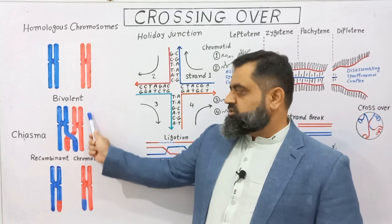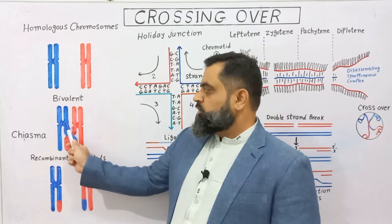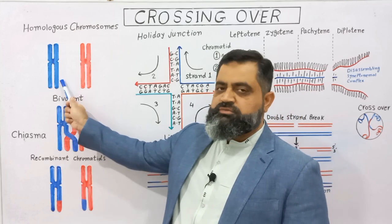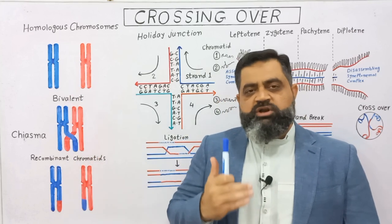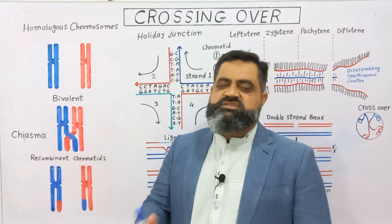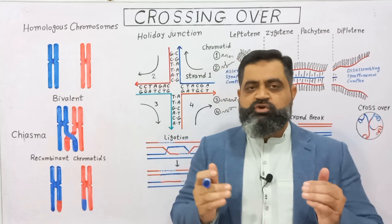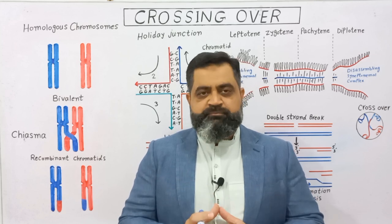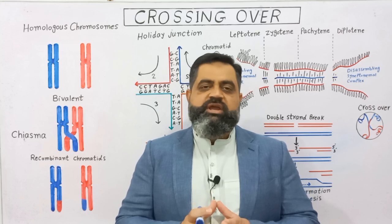After synapsis, a structure is formed known as a bivalent or tetrad. In this structure, non-sister chromatids — one chromatid from each chromosome — overlap with each other at one or more points, forming a connection known as chiasma. A structure called the synaptonemal complex is formed here, and during synaptonemal complex formation there is an exchange of DNA between these two non-sister chromatids, which is known as crossing over.